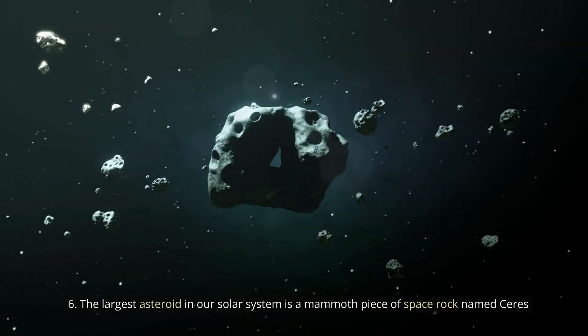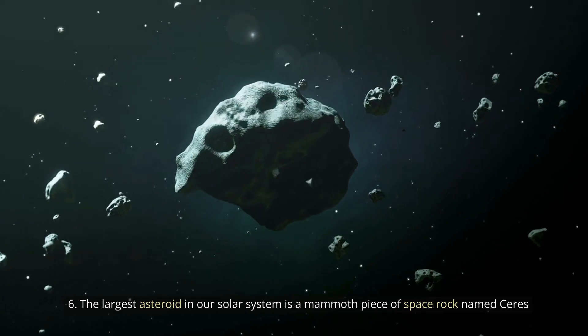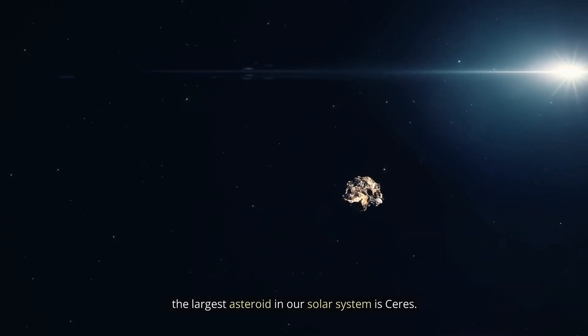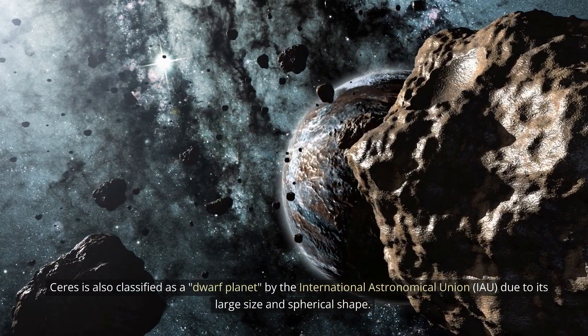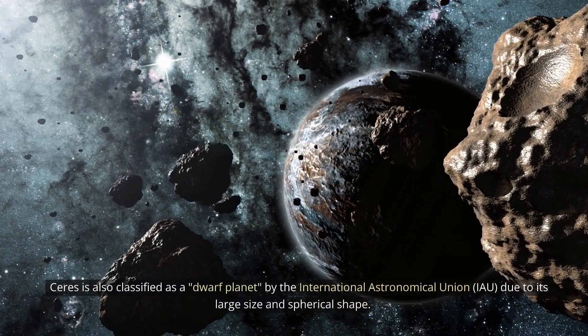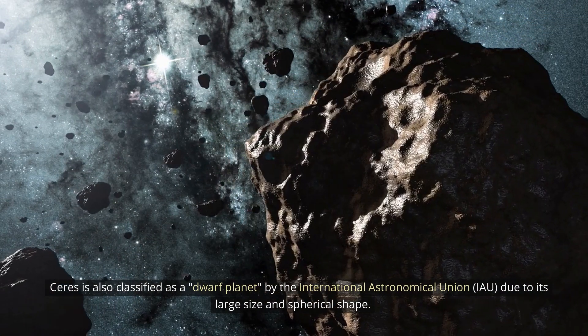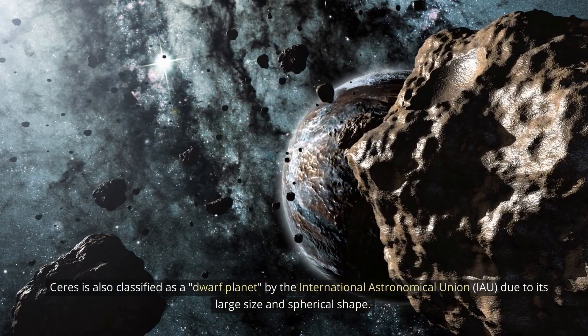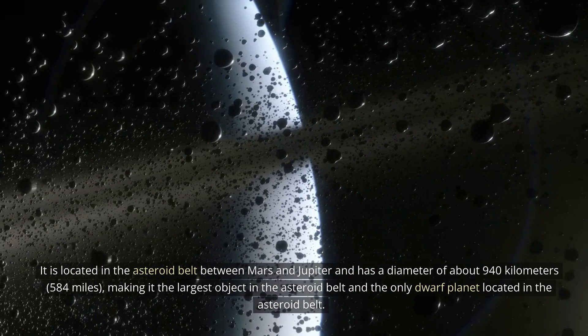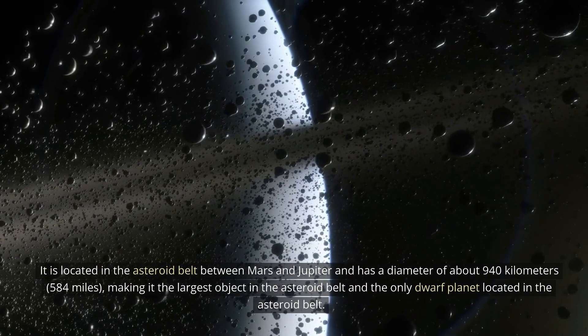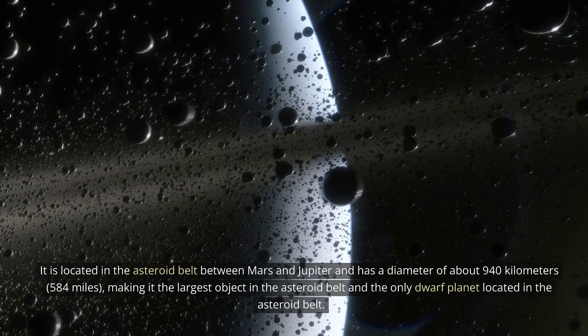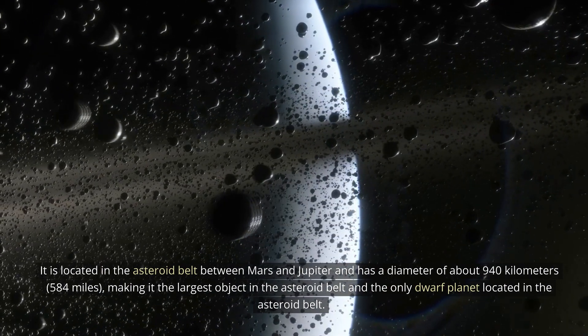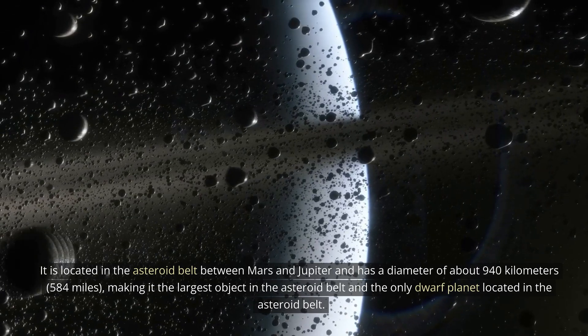6. The largest asteroid in our solar system is a mammoth piece of space rock named Ceres. The largest asteroid in our solar system is Ceres. Ceres is also classified as a dwarf planet by the International Astronomical Union (IAU) due to its large size and spherical shape. It is located in the asteroid belt between Mars and Jupiter and has a diameter of about 940 kilometers (584 miles), making it the largest object in the asteroid belt and the only dwarf planet located in the asteroid belt.